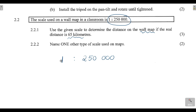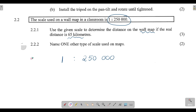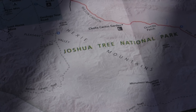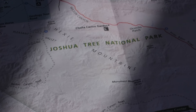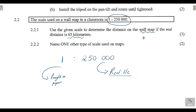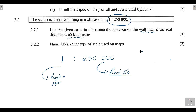Let's understand what this number scale represents. The 1 represents the units on paper — the measured distance or measured length on paper. The 250,000 represents the length in real life. For example, if you have a map and you want to determine the total distance you would travel from Johannesburg to Durban, you would measure the length on your map.